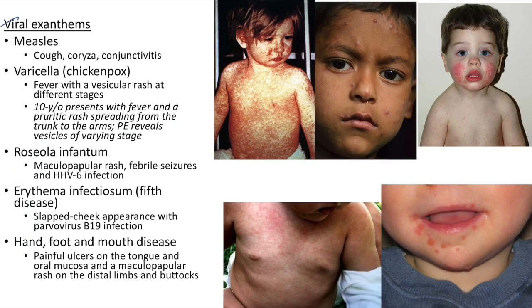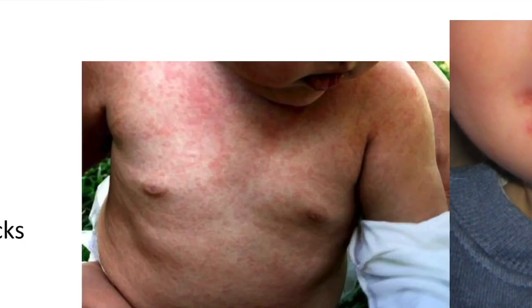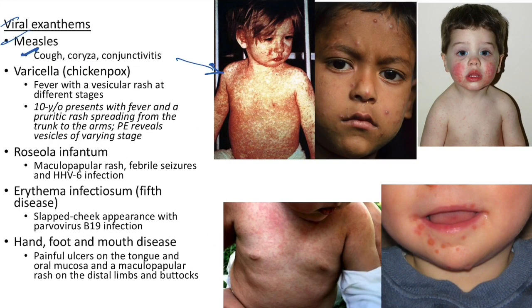Viral exanthems: measles — cough, coryza, and conjunctivitis along with maculopapular rash. Varicella — fever with a vesicular rash at different stages. Case: 10-year-old presents with fever and a pruritic rash spreading from the trunk to the arms; physical examination reveals vesicles of varying stages.